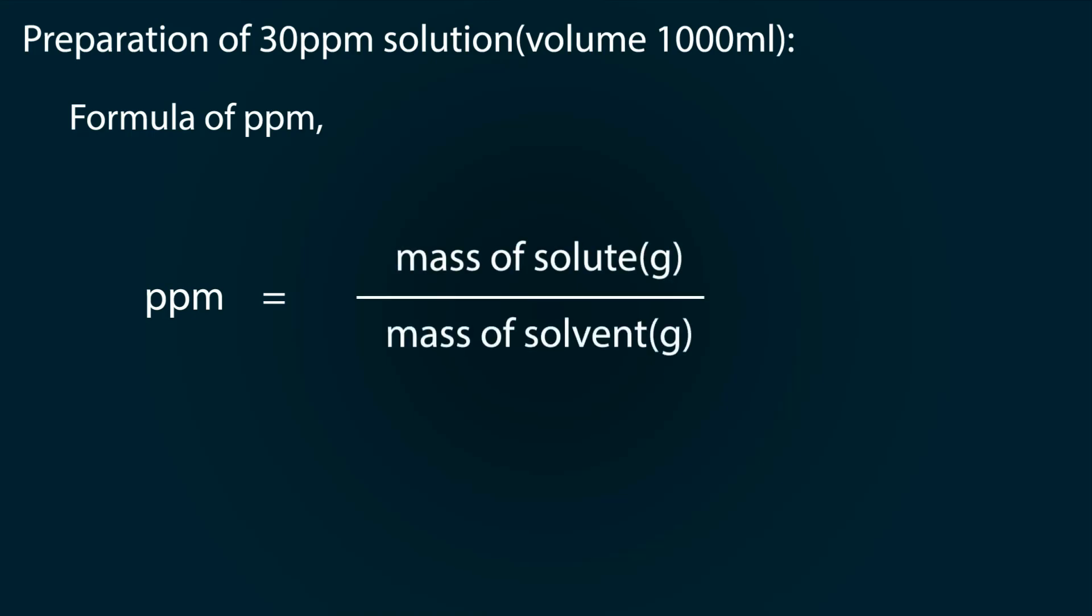Let's do some calculations. To make a 30 ppm solution, we have to find out the formula of ppm. PPM is equal to mass of solute divided by mass of solvent multiplied by 10 raised to power 6. We have 30 ppm. For that we have to find out mass of solute.